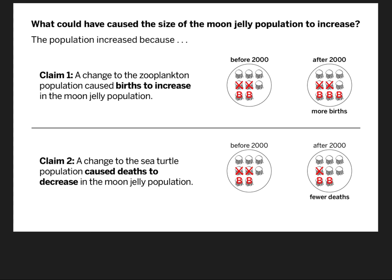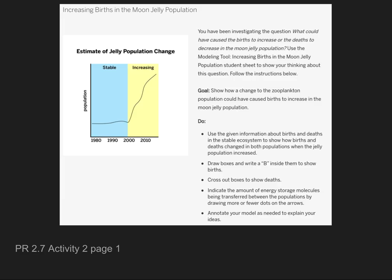As you go on, your Amplify work has some instructions. It has the graph we were referring to — pretty much stable until about 2000 for the population of moon jellies, and increasing after 2000. It asks you to investigate: what could have caused the births to increase or the deaths to decrease in the moon jelly population? We're getting this population increase because of one of those two claims.